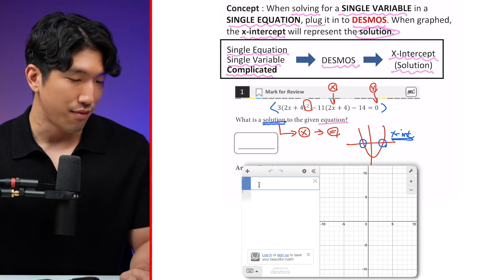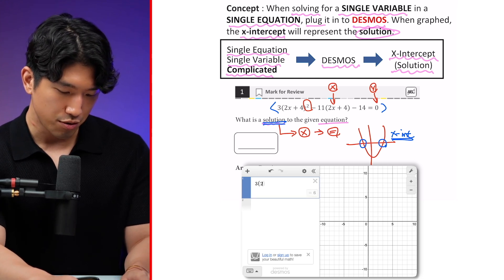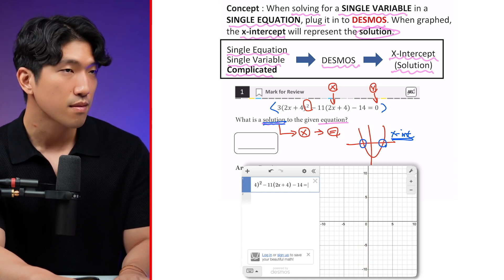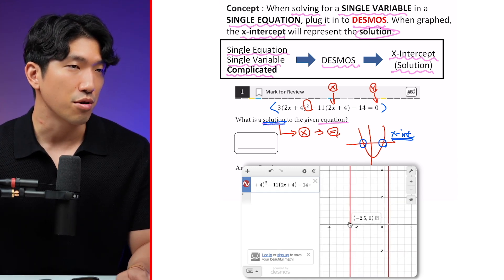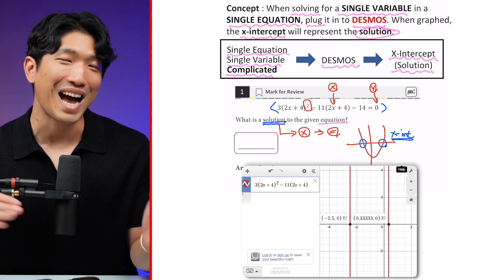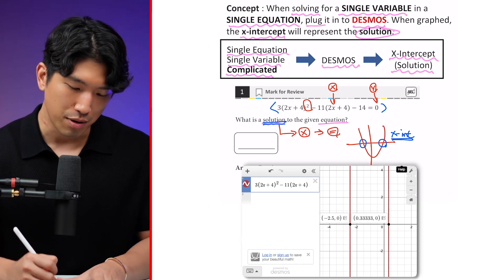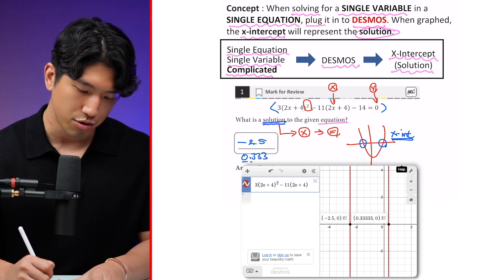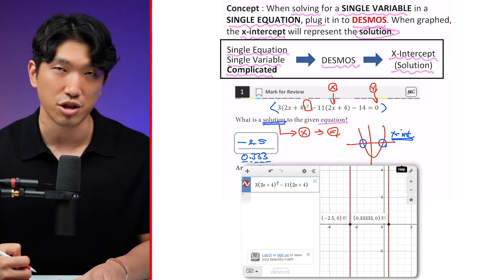So let's pull up Desmos and graph it out. We're going to get 3(2x + 4). And we see that our x-intercepts are located at -2.5 and 0.33, which means either of them can be the answer. So we can put either -2.5 or 0.333. You get five spots on the digital SAT.